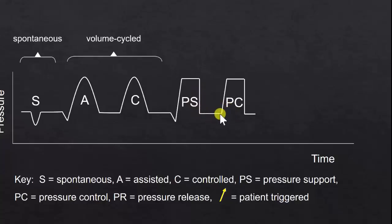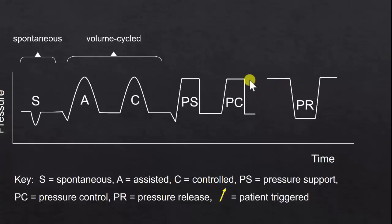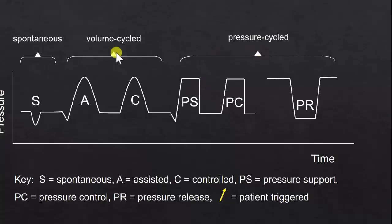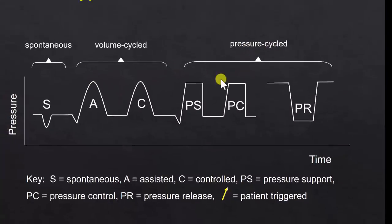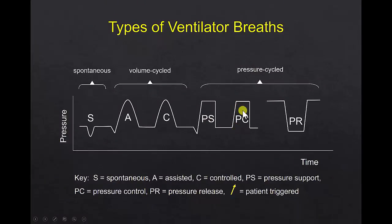A pressure-controlled breath has a timer initiating the breath, then maintains the pressure at the target for a certain amount of time. A pressure release breath maintains the pressure at a high level of PEEP and then releases the breath for a short amount of time to keep the pressure maximally high as long as possible. In volume-cycled breaths, the peak airway pressure depends on the breath size, lung mechanics, and patient effort, whereas in pressure-cycled breaths, the volume delivered depends on how much pressure is delivered.